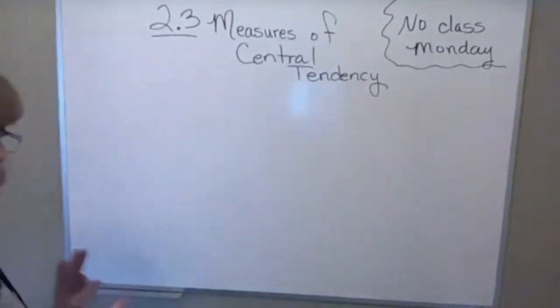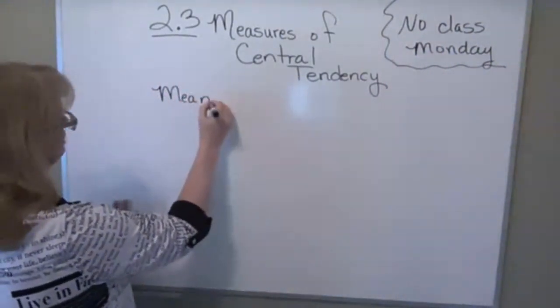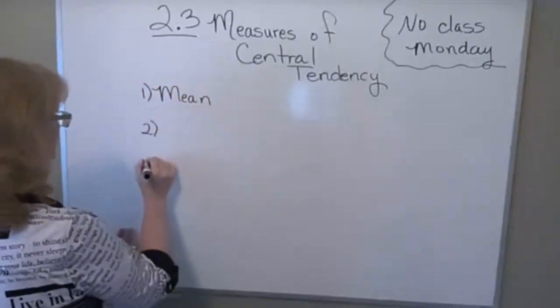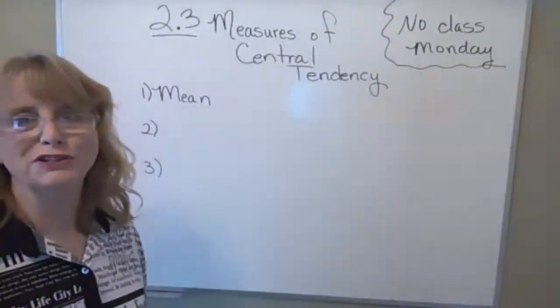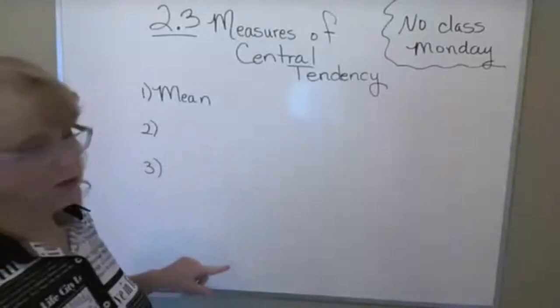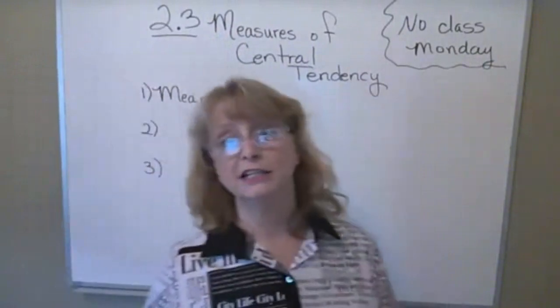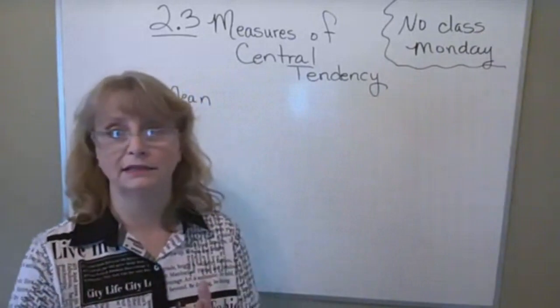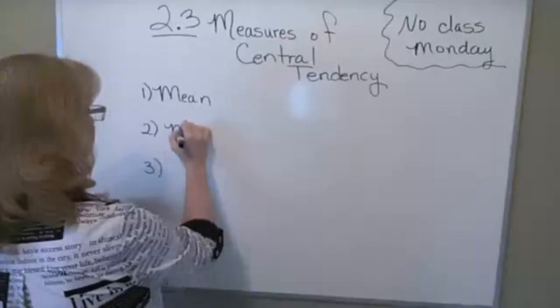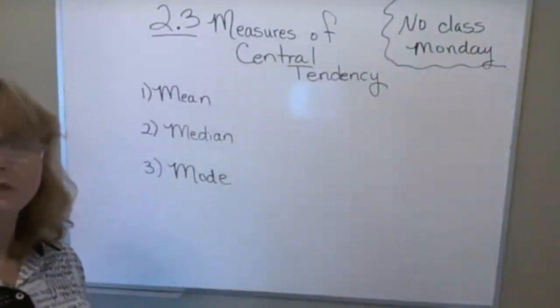So there are three measures of central tendency, and they are mean. The other two start with an M also. What are the other two? These are numbers that describe the middleness of a data set — they kind of describe the center. Median — and what's the third one? Mode. Very good. Those are the three measures of central tendency.